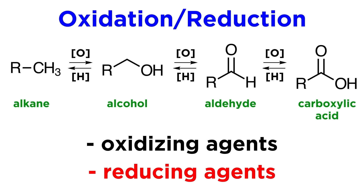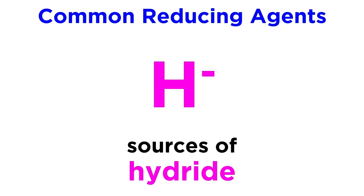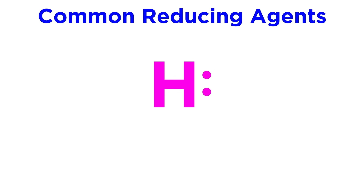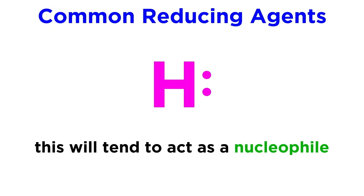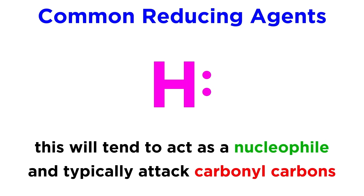Now let's check out a few reducing agents. Most of the reducing agents we will see are sources of hydride, or H-. This is a hydrogen atom with a pair of electrons, instead of just one, so this will act as a nucleophile, allowing it to attack a partially positive carbonyl carbon.